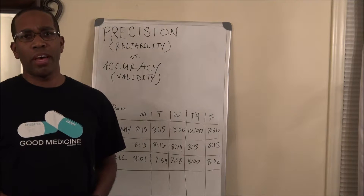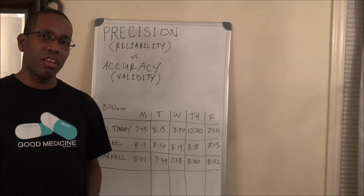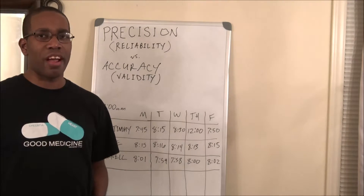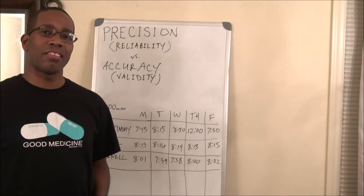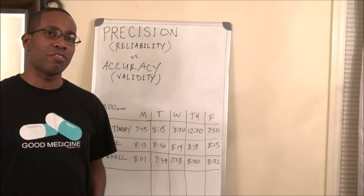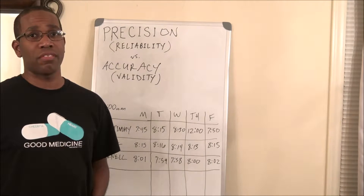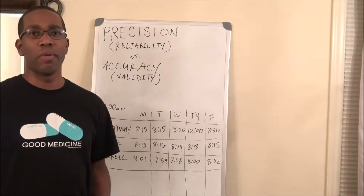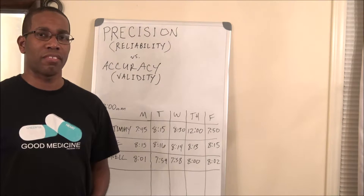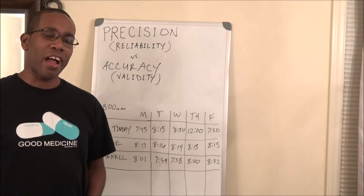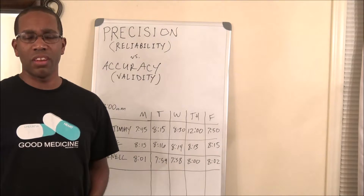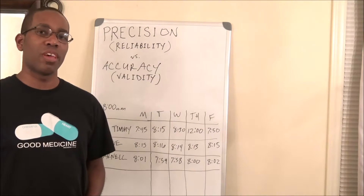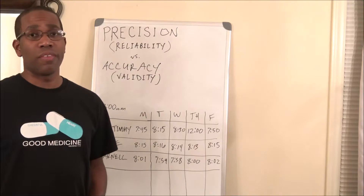I want to take a minute to talk about precision versus accuracy. The difference is that precision is how close multiple measurements are to themselves — how close the numbers are to each other. Accuracy is how close the measurements are to a given target, to a given goal.